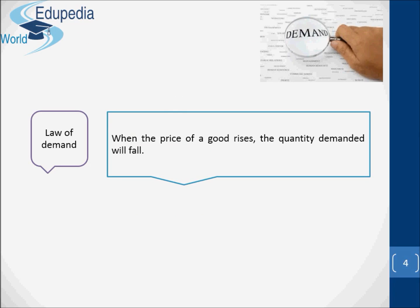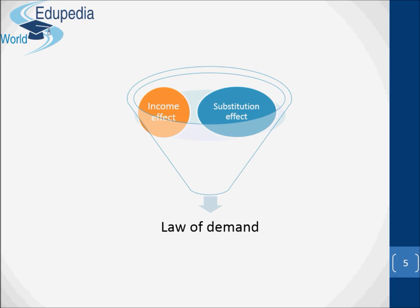This is simply an illustration of the general relationship between price and consumption. When the price of a good rises, the quantity demanded will fall. This relationship is known as the law of demand. There are two reasons for this law. First, people will feel poorer — they will not be able to afford to buy so much of the good. The purchasing power of their income has fallen. This is called the income effect.